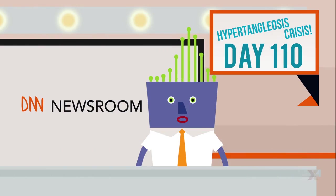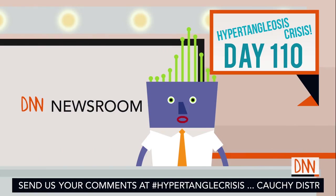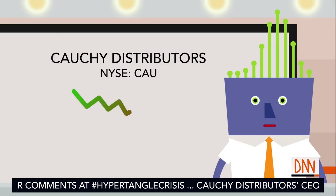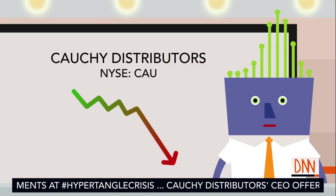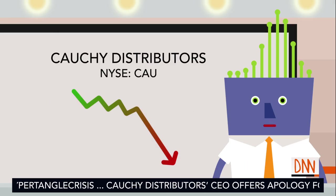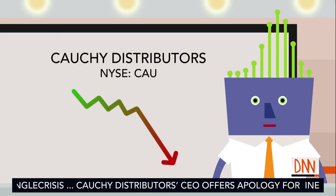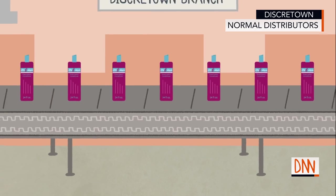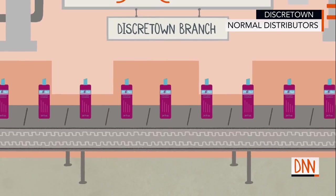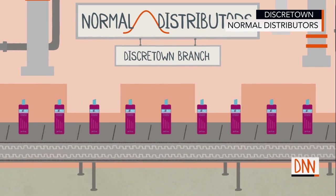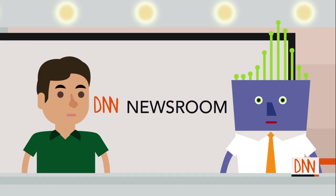We're back, live, on day 110 of our coverage of the hypertangulosis crisis. Cauchy distributors' stock price has plummeted in the last week as it has become clear that their quality control is far inferior to their competitor. In other news, normal distributors has just released a new formula of the conditioner that patients can apply at home instead of at a clinic with limited capacity. Professor Blitzstein is here to help us predict the ramifications.